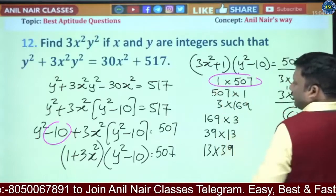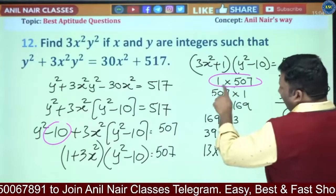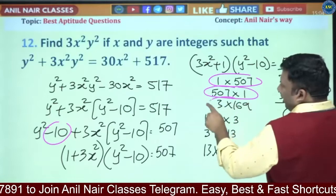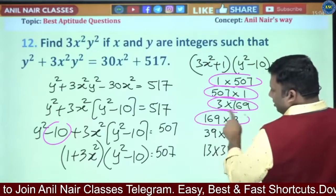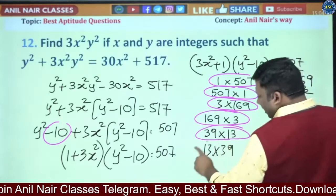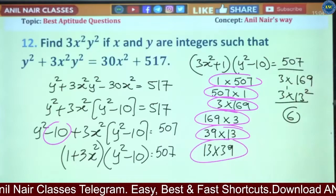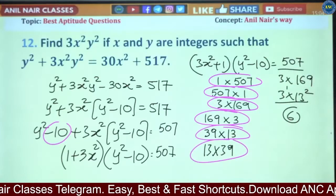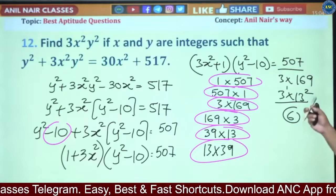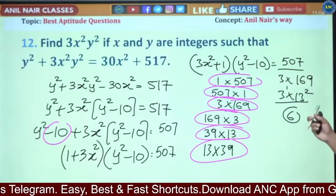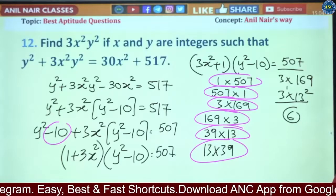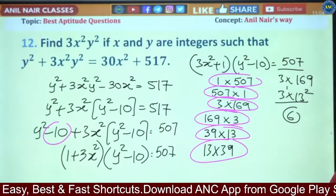1 × 507, 507 × 1, 3 × 169, 169 × 3, 39 × 13, and 13 × 39. Any other cases are there? Let us see. 13² is 169, 13^1 is 13, so 13 × 3 = 39 we took. Now one by one we will discuss.